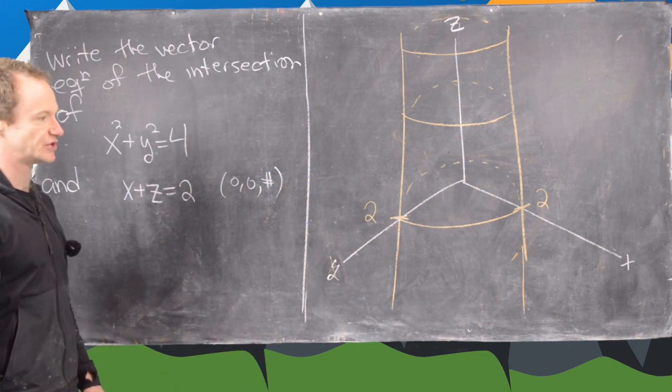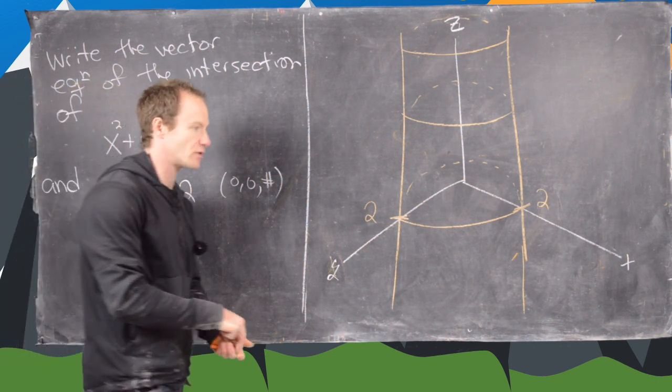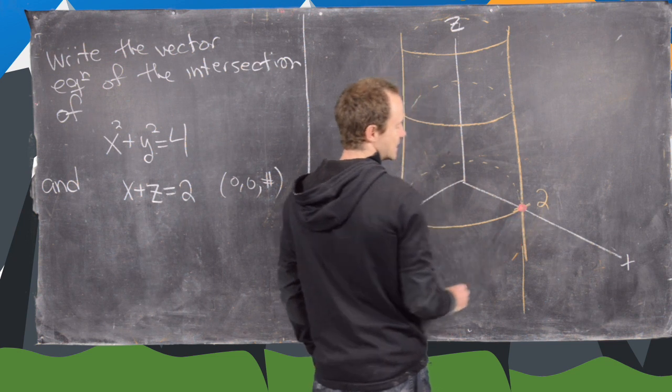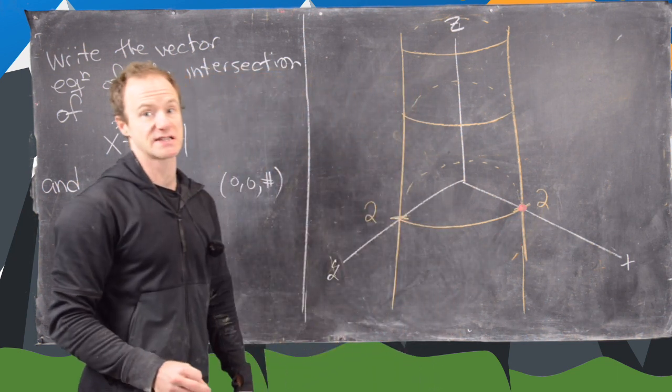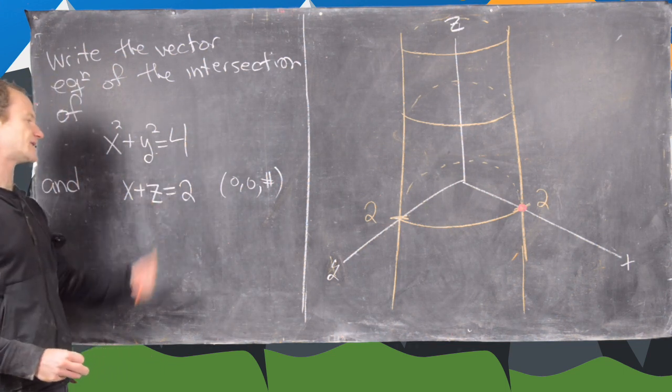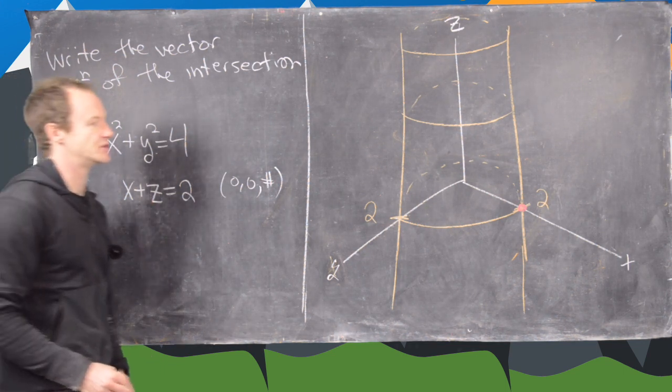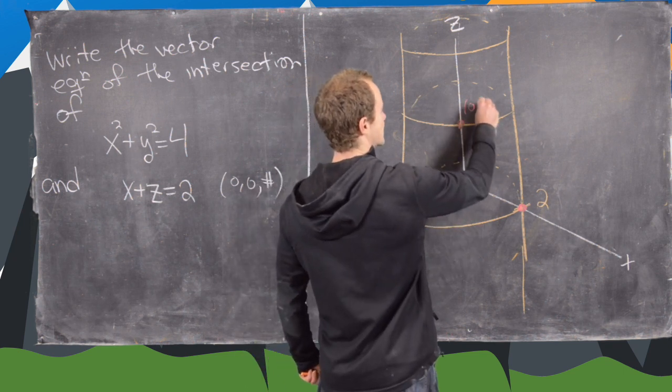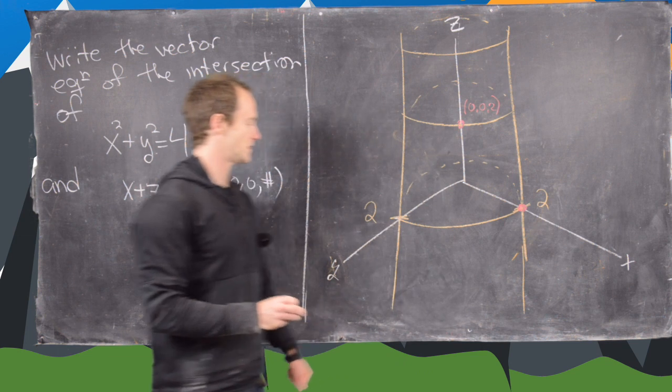So the next thing we want to notice is this plane, x plus z equals 2. So notice that's going to at least contain this point right here, x along the x-axis of 2. In other words, 2, 0, 0, because notice that absolutely satisfies x plus z equals 2. It's also going to contain this point up here, which is the point 0, 0, 2.